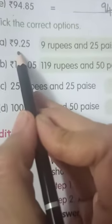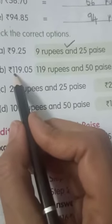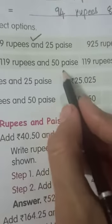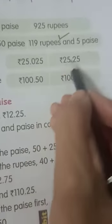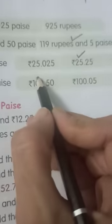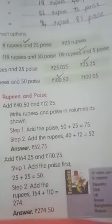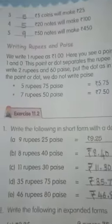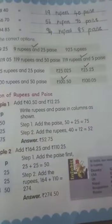Now students, we have to select the correct options. 99 rupees and 25 paise — this is the correct one. Next, 119 rupees and 5 paise — the option showing 50 is wrong, so the correct one is 119 rupees and 5 paise. Next, 50 rupees and 50 paise; and 100 rupees and 50 paise. Students, you have to be perfect in rupees and paise, the short form of rupees, and the expanded form. Thank you and be ready for the next class.